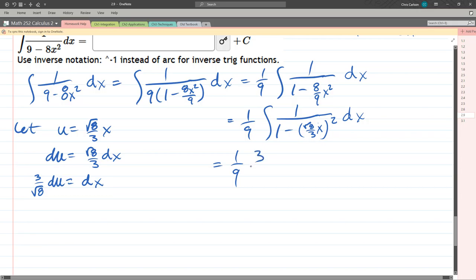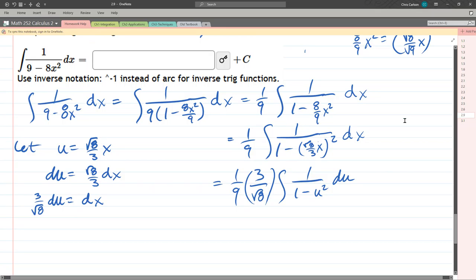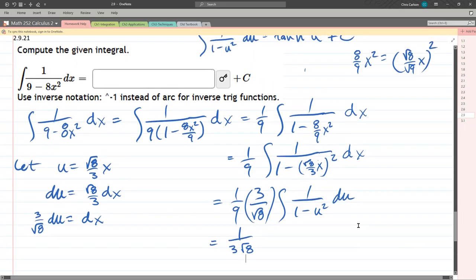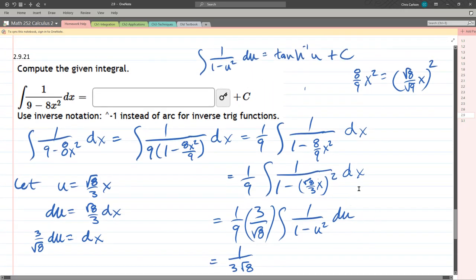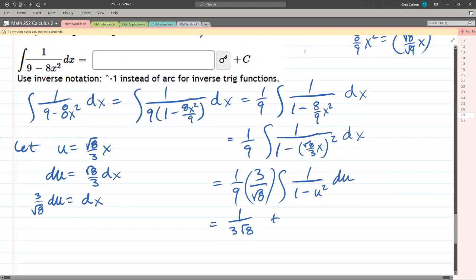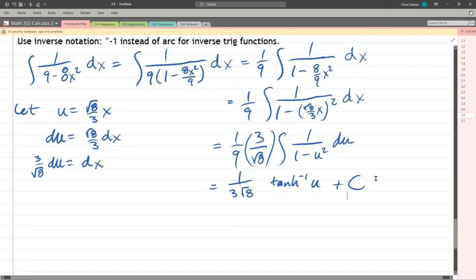And we will make our substitution now. We have an extra constant here. The three and the ninth can cancel out a little bit, so we have one over three square root eight. Now everything is perfect - look at that. Hyperbolic tangent inverse u plus c.